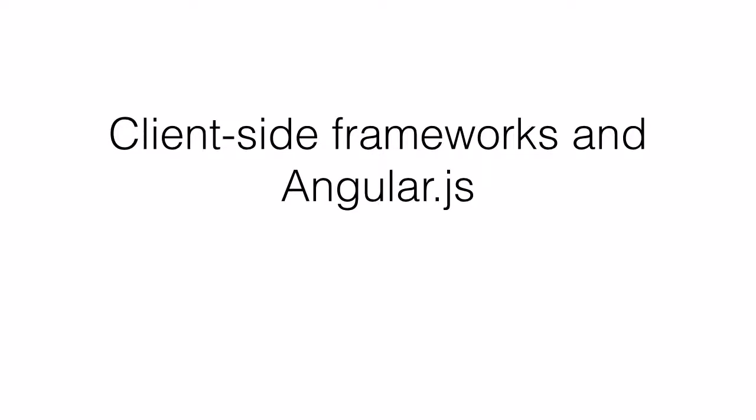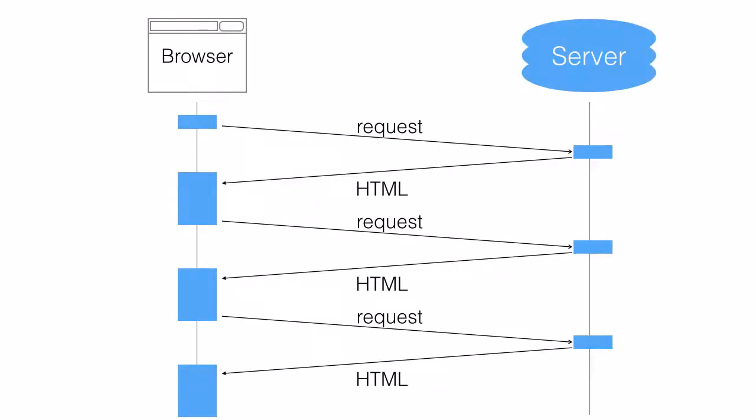This video introduces client-side web frameworks, and in particular Angular.js, for students who are used to working with server-side web frameworks. I'm going to explain the differences and show how to build a very simple app in Angular.js. There's another video which shows that demonstration app in action. This diagram, based on a UML sequence diagram, shows what happens between a browser and a server for a traditional server-side web application framework.